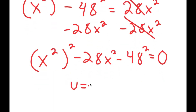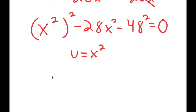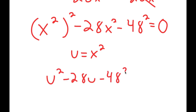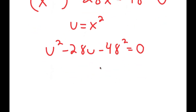Now I'm going to set u equal to x squared. So I get u squared minus 28u minus 48 squared equals 0. I can solve this by completing the square, so I'm going to add 48 squared to both sides.